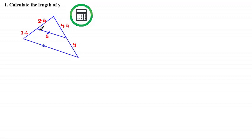Notice that here we have two parallel lines, and this means that these two angles are equal because they are known as corresponding angles — and the same for these two angles. They're equal.